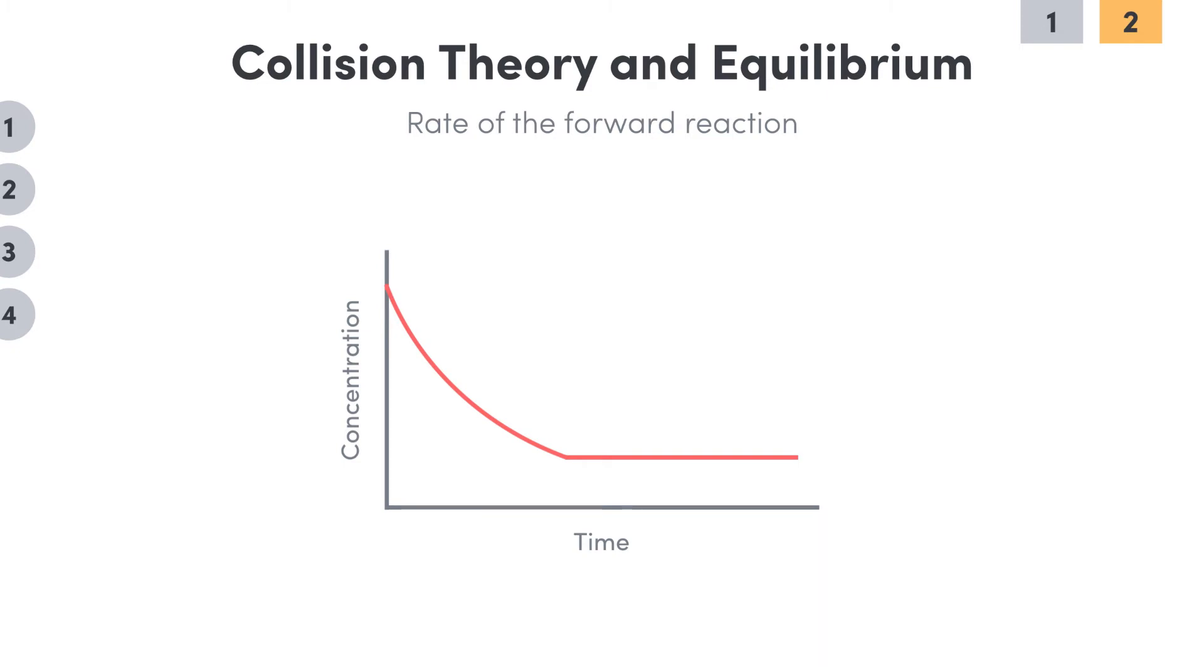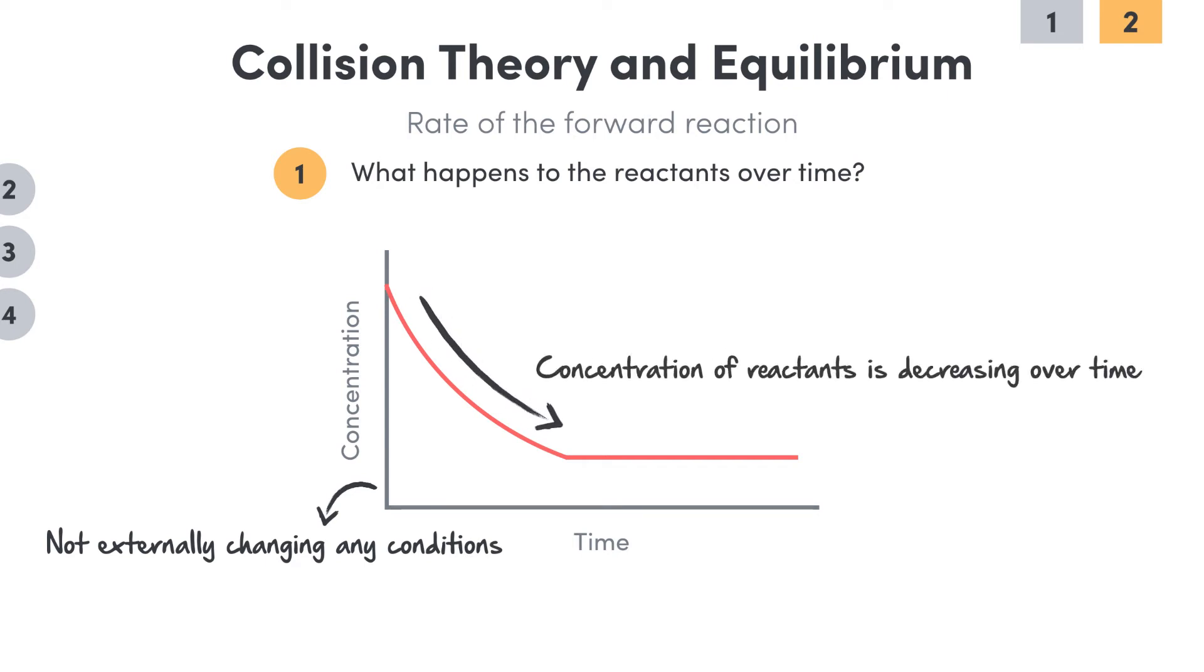So, looking at our set of questions on collision theory, with question one we aren't externally changing any conditions this time. But the concentration of the reactants is decreasing as time goes on. So, what does that do to the reactant particles? Well, simply put, it reduces the number of them.